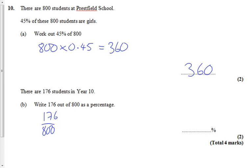So there's another way you can do it. If you've got no calculator, you can cancel that fraction down. If you have a calculator, you can just do 176 divided by 800, or you can cancel down the fraction.